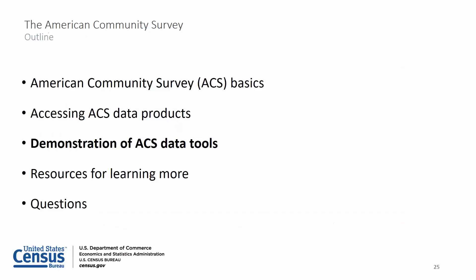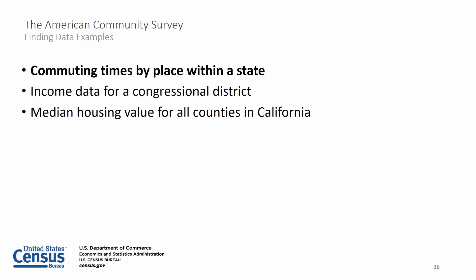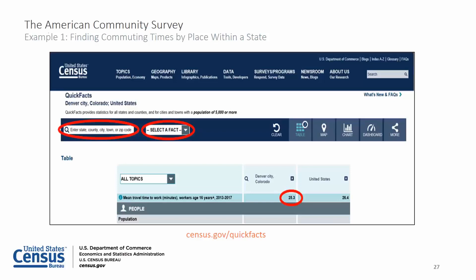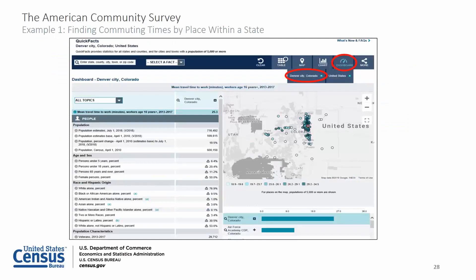I will now walk you through three examples using different tools to find ACS data. In my first example, we'll use QuickFacts to find commuting times for a place. Start by going to QuickFacts at census.gov/quickfacts. I typed Denver into the search box, chose Denver City, Colorado, and selected Transportation from the select-a-fact dropdown menu. The mean travel time to work is 25.3 minutes in Denver City, Colorado. I then clicked on the dashboard button to see a table, map and chart for my selected geography, showing mean travel time to work for different places in Colorado.